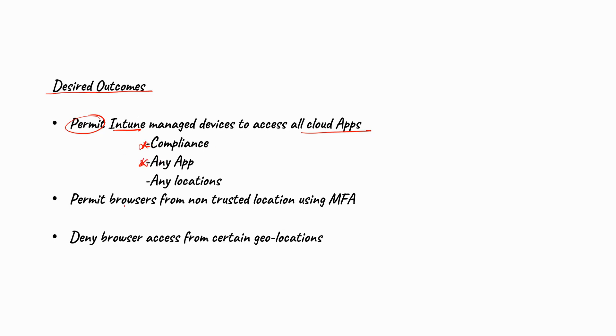And within Intune, you can go ahead and configure your devices to have access to all these applications from any location. Another desired outcome within organization would be to permit browsers from non-trusted locations to have access to our applications. And if we have that special group that needs special privileges, like we said earlier on, we can always implement multi-factor authentication, maybe in form of an SMS that is sent to their mobile devices, generating a one-time pin that simply allows them to authenticate themselves and gain access to a particular application.